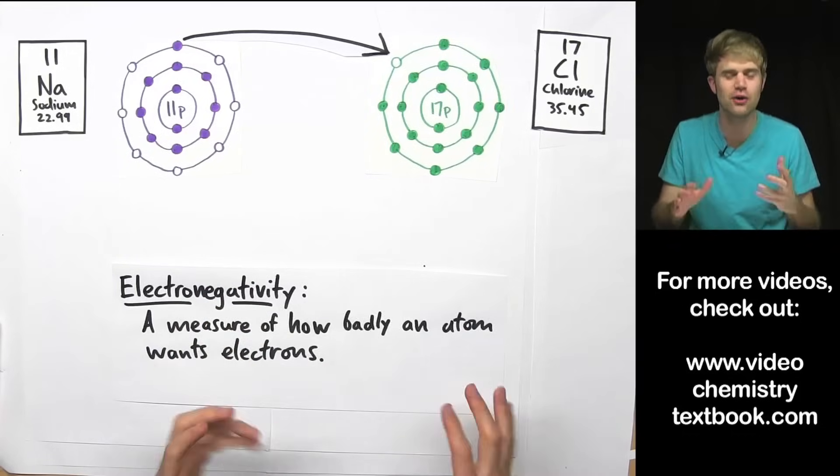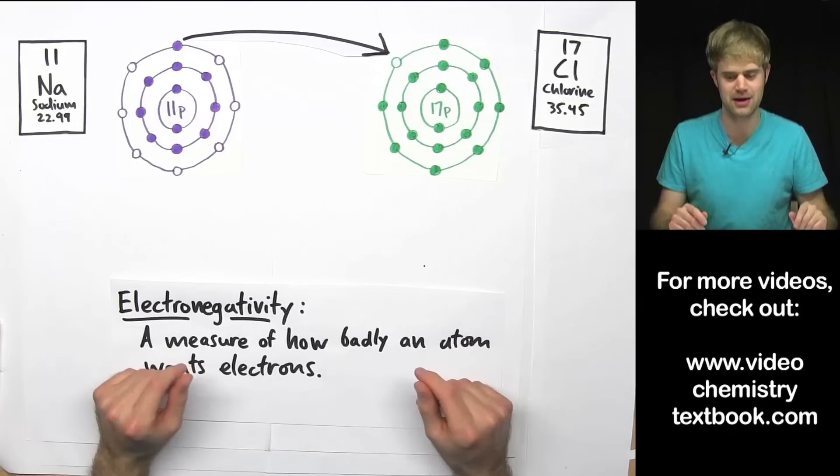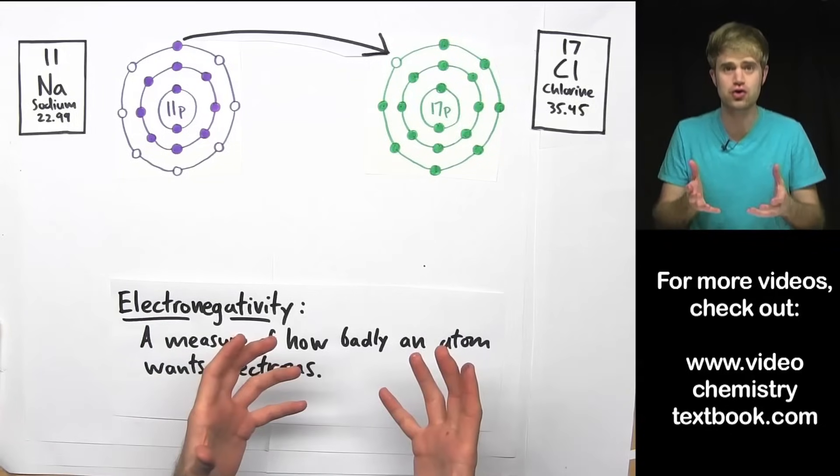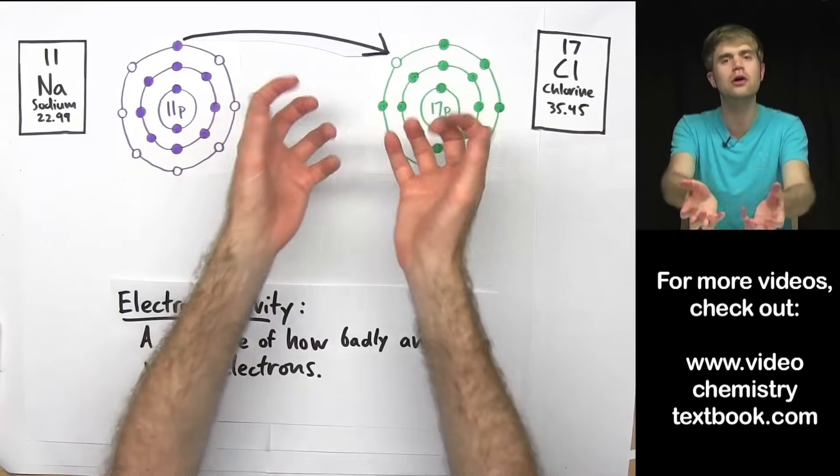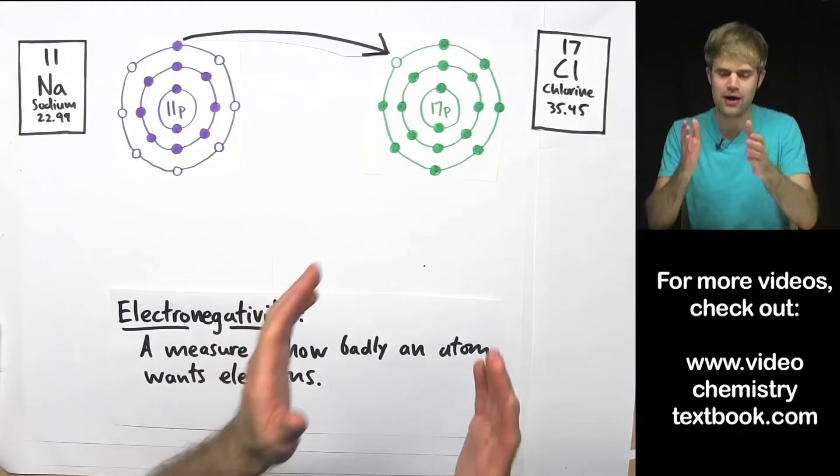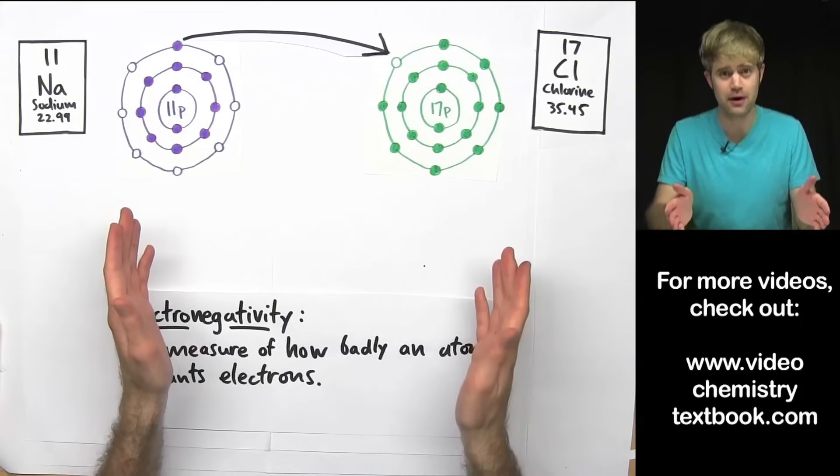So in ionic bonding, there are electron givers and there are electron takers. This has to do with whether an atom is a metal or a nonmetal.